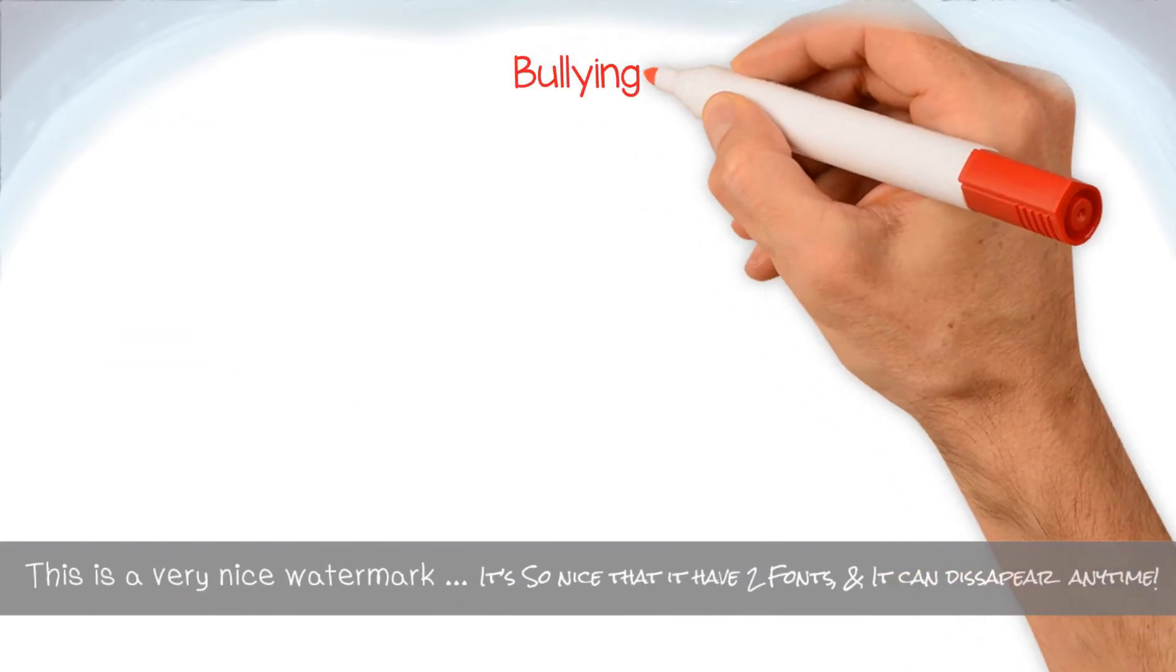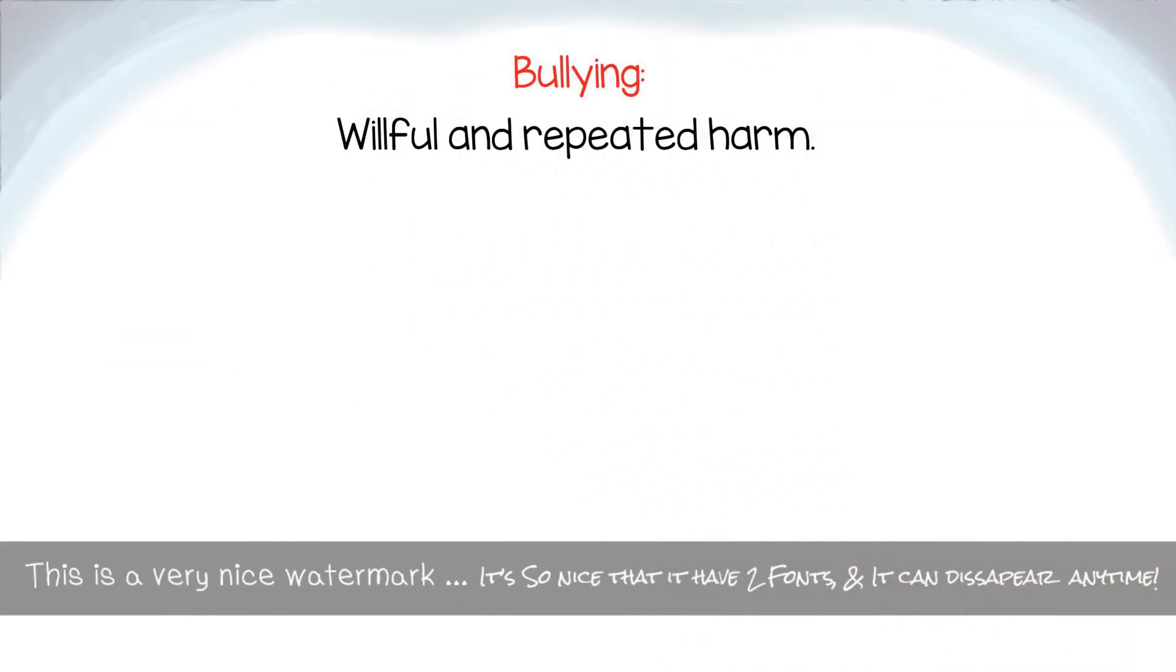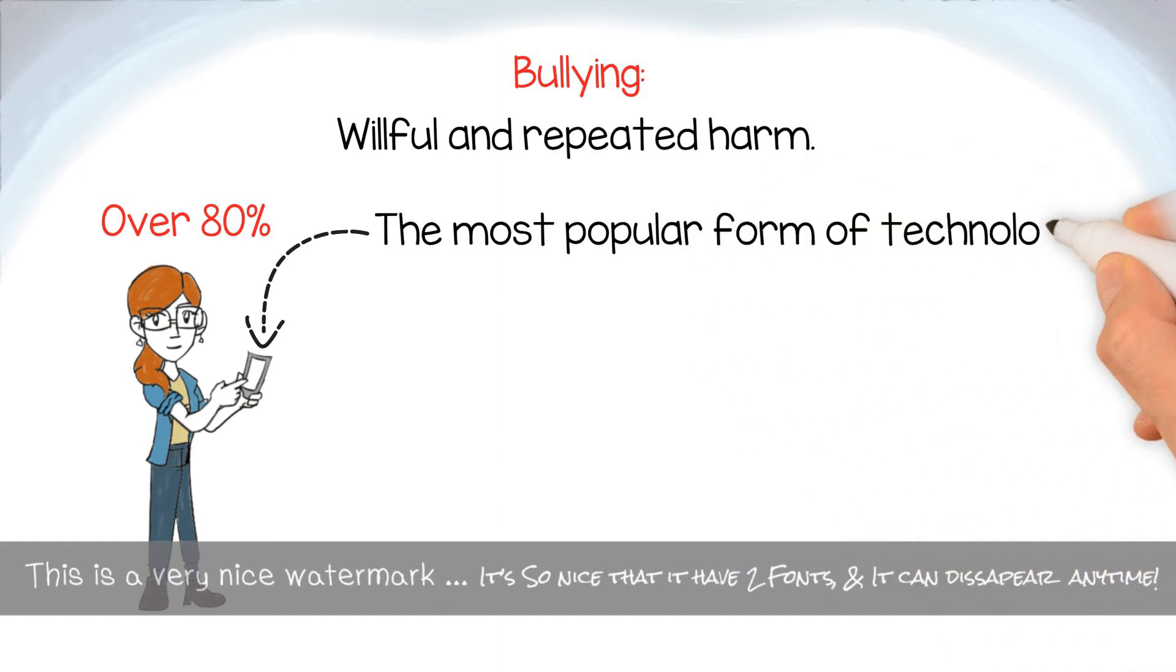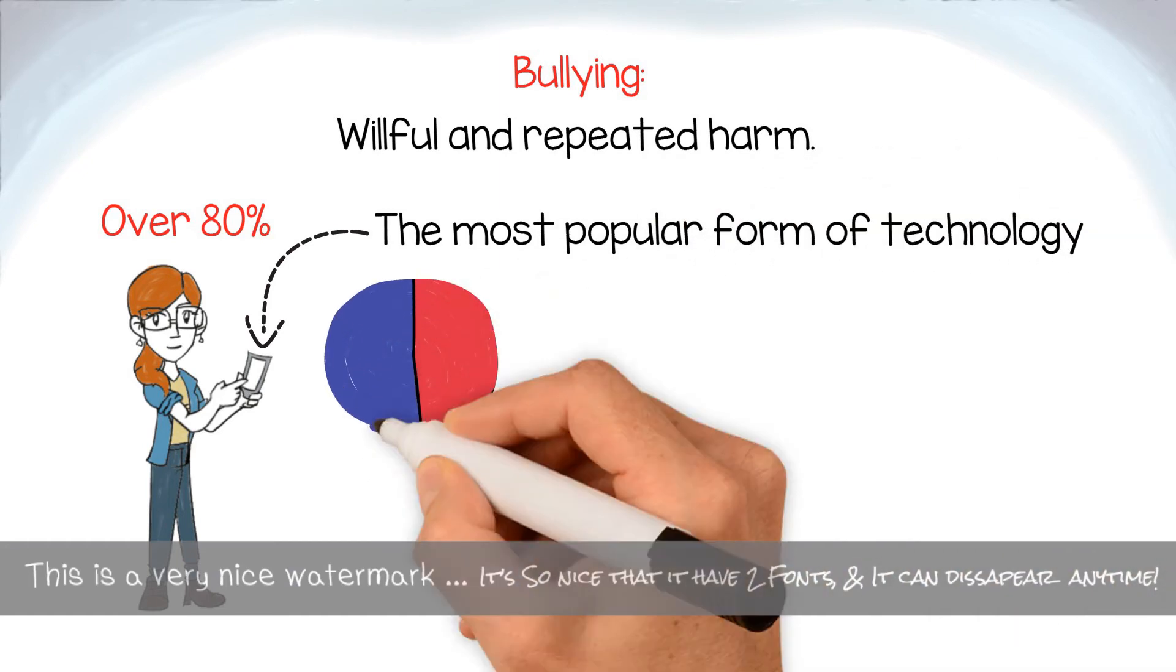Bullying is defined as willful and repeated harm. Statistics show us over 80% of teens use a cell phone regularly, making it the most popular form of technology and a common medium for cyberbullying.